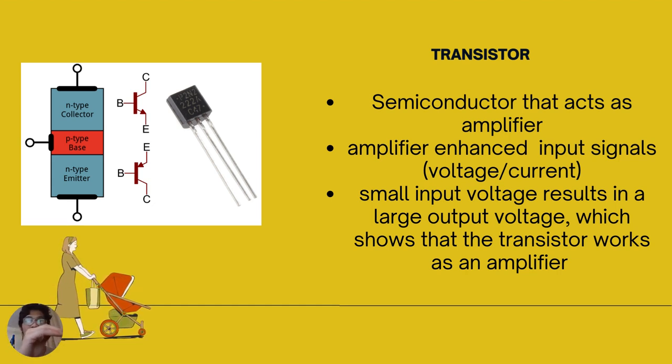The low resistance in the input circuit lets any small changes in input signal result in appreciable changes in the output. The emitter current caused by the input signal contributes to collector current, which when flows through the load resistor results in a large voltage drop across it. Thus a small input voltage results in a large output voltage, which shows that the transistor works as an amplifier.